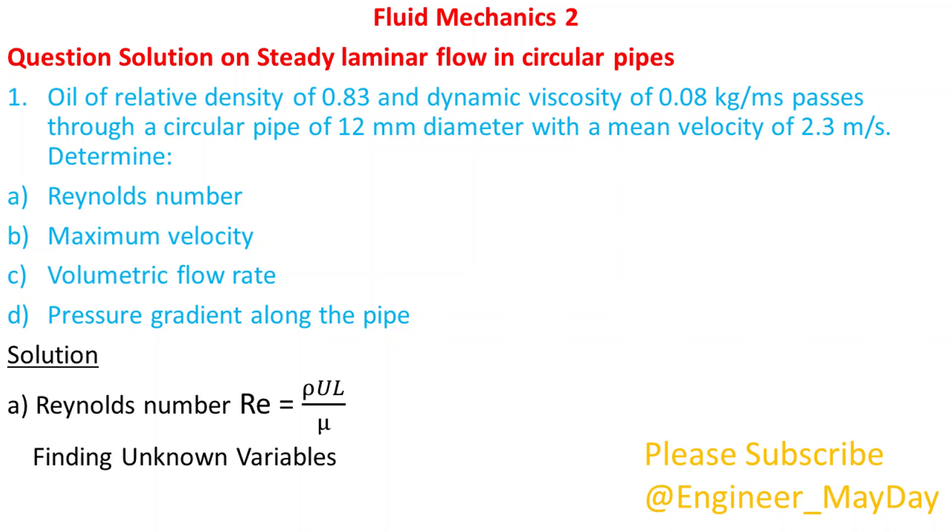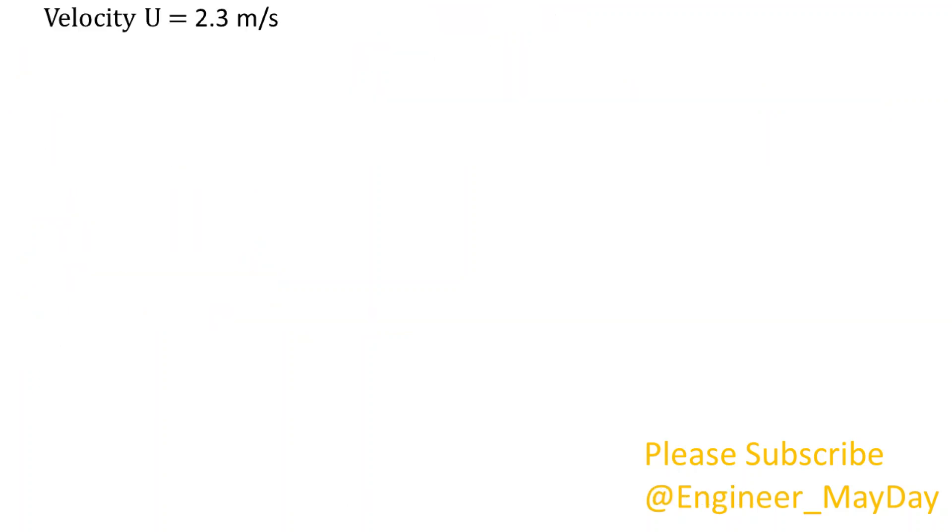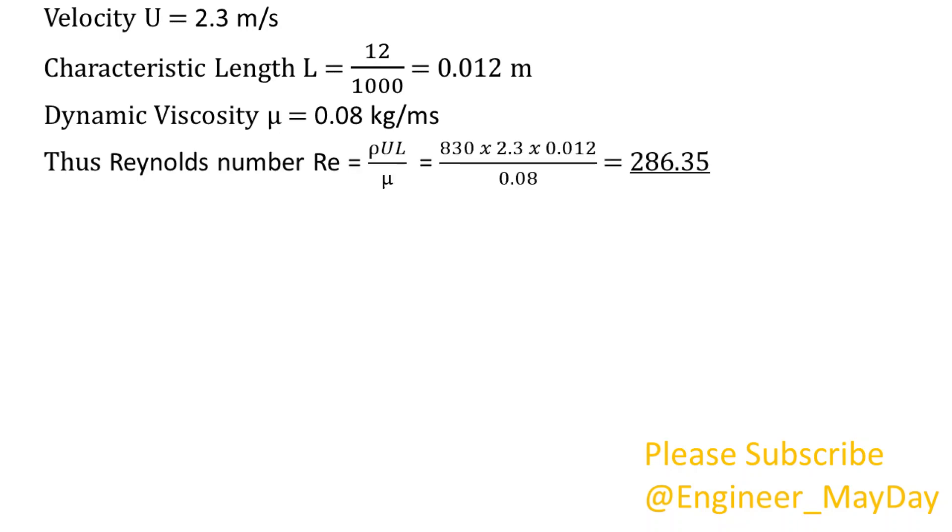Finding unknown variables. Density rho is equal to relative density multiplied by 1000 which gives us 830 kilogram per cubic meter. Velocity is given as 2.3 meters per second. Characteristic length L will be 0.012 meters. Dynamic viscosity mu is given as 0.08 kilograms per meter second. Thus Reynolds number is equal to 286.35.